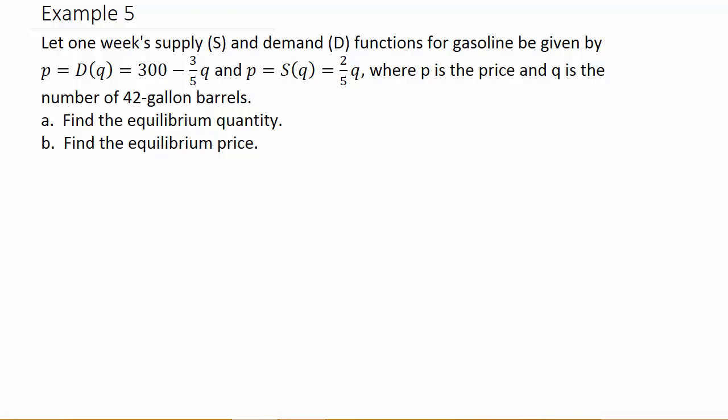Let one week's supply (S) and demand (D) functions for gasoline be given by P = D(Q) = 300 - (3/5)Q and P = S(Q) = (2/5)Q.